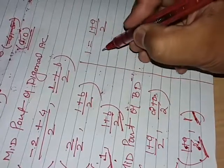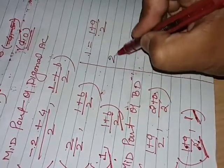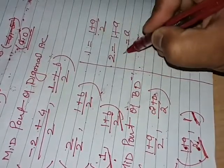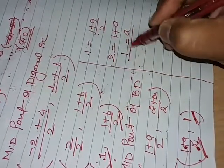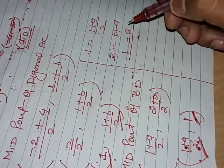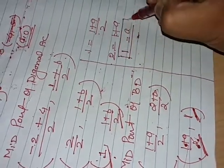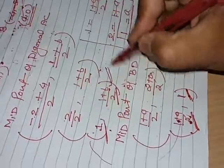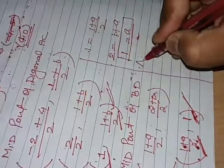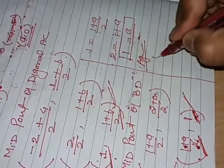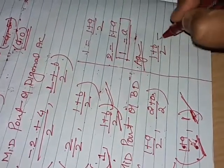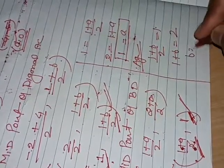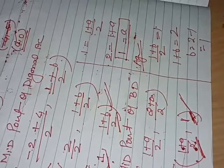Solving: 1 = (1 + a)/2, so 2 = 1 + a, therefore a = 1. For b: (1 + b)/2 = 1, so 1 + b = 2, therefore b = 2 - 1 = 1. So the value of a is 1 and the value of b is 1.